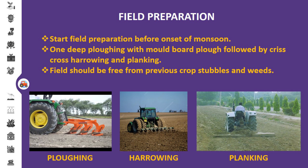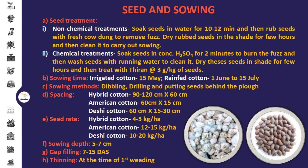Start field preparation before the onset of monsoon. Carry out one deep plowing with the help of a mould board plow at a depth of 15 to 20 centimeters, followed by crisscross harrowing with a cultivator. Then planking should be done to level the land. The fields should be free from previous crop stubbles and weeds.